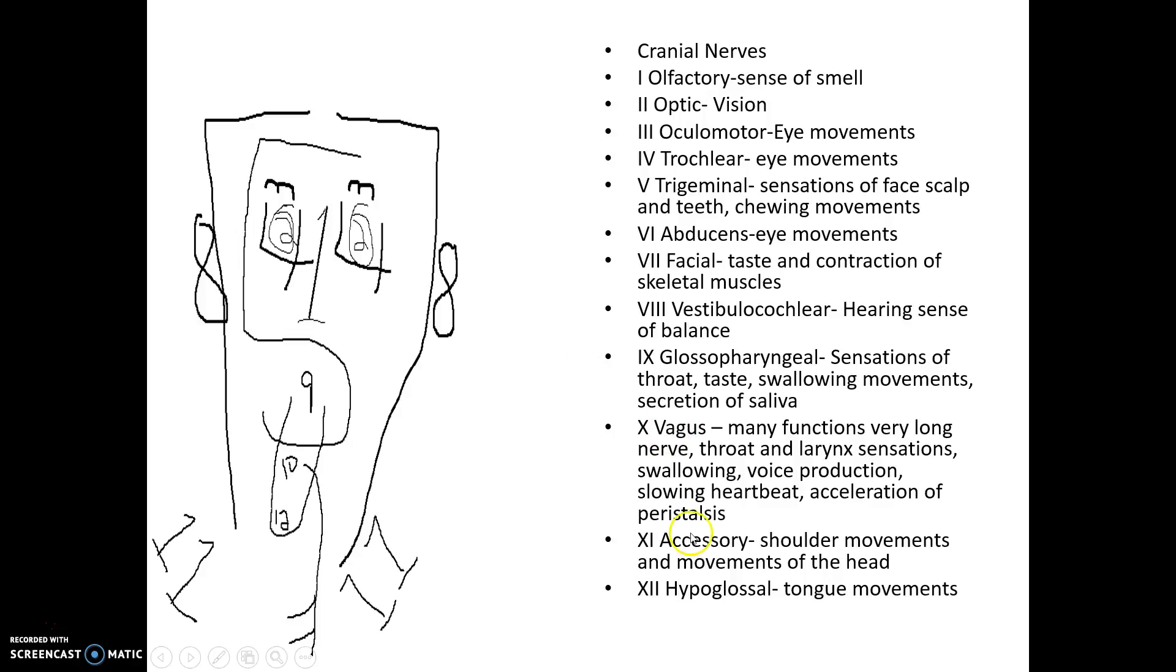Number 11, accessory, with shoulder movements and movements of the head. Notice if this is my head here, I've got this 11 right here and here kind of being out towards the shoulder but also towards the head. Then hypoglossal means tongue movement. I drew my tongue here. Hypo means below and glosso means tongue, so this is the lower portion below the tongue area. This silly little thing, if you can draw it as you're learning these, it'll actually help you remember where these things are.